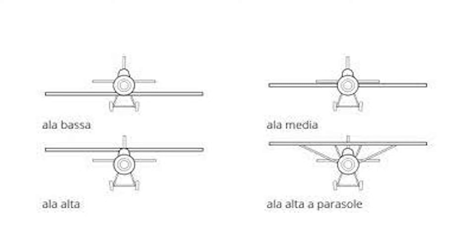Un'ala media è posizionata in mezzo alla fusoliera. Gli aerei ad ala media, dal punto di vista aerodinamico, sono quelli con migliori prestazioni. In questa soluzione però il longherone alare deve attraversare la fusoliera e questo in genere crea difficoltà nella gestione dello spazio all'interno. Un'ala alta è posizionata invece sopra la fusoliera.